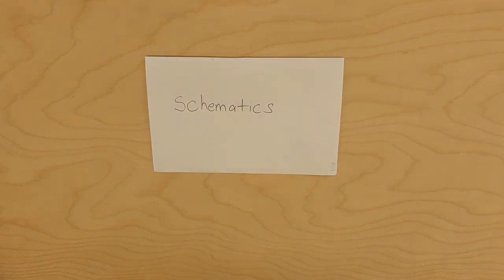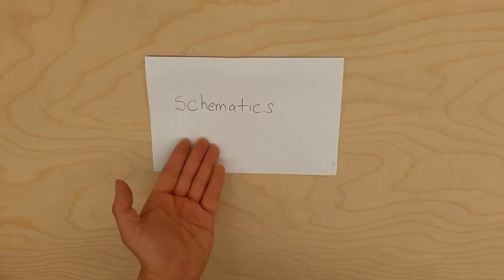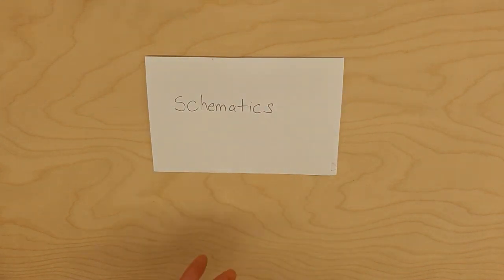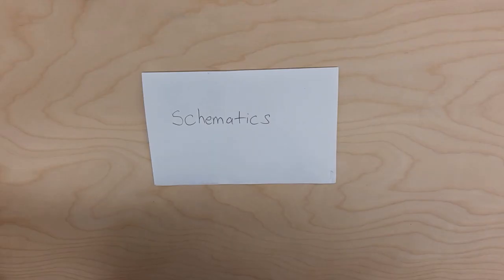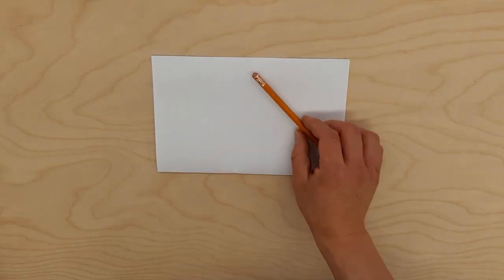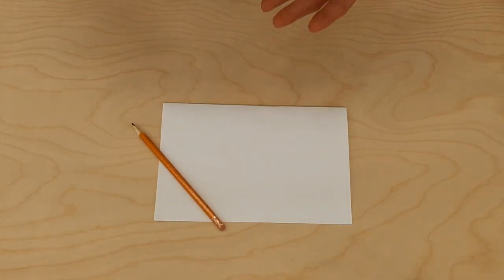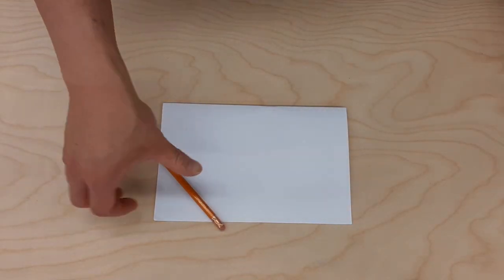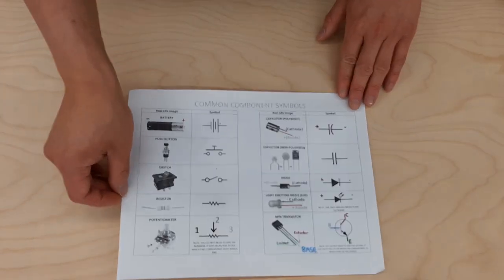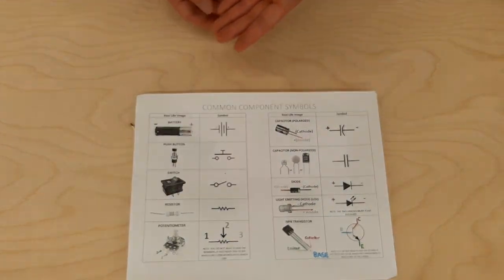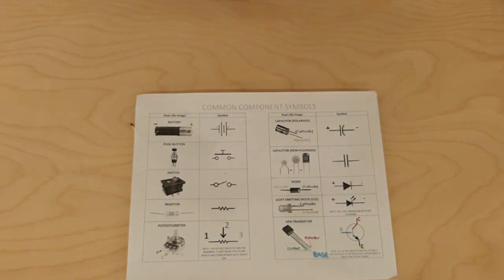In this video we're going to go over how to draw schematics for our circuits. Schematics are essentially plans for circuits so that you can communicate your circuit design to somebody else. For this activity you're going to need just paper and pencil, and especially as you're learning for the first time, having a copy of the common component symbol decoder will be very handy.